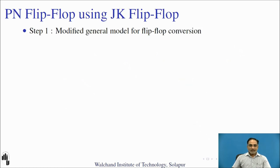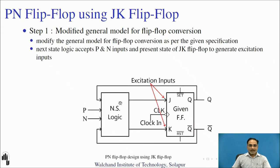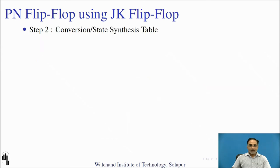Let us modify the general model for flip-flop conversion as per the specifications. The next-state logic accepts inputs P and N along with the present state of the JK flip-flop, and generates the excitation inputs required for the given flip-flop. Now let us derive the conversion table, also called the state synthesis table, from the characteristic table of a PN flip-flop. Please pause here and derive the characteristic table of the PN flip-flop using the function table learned in the previous slides.